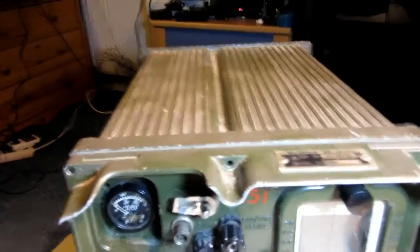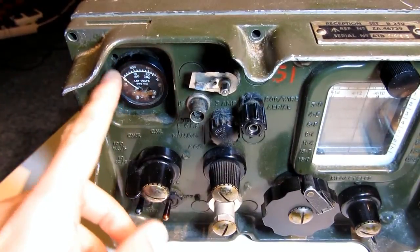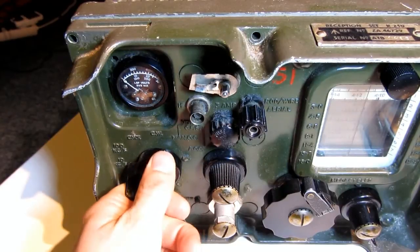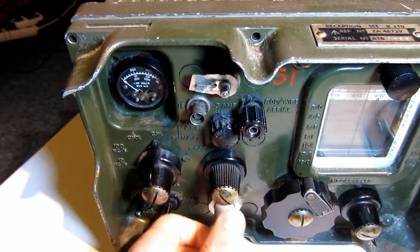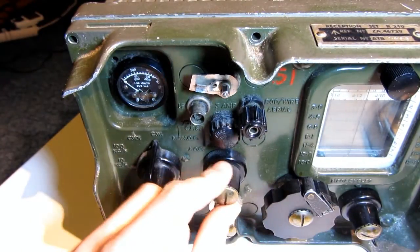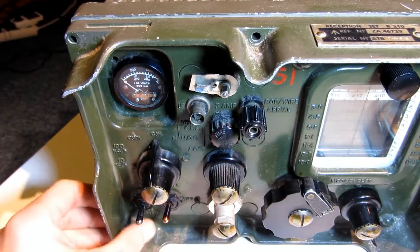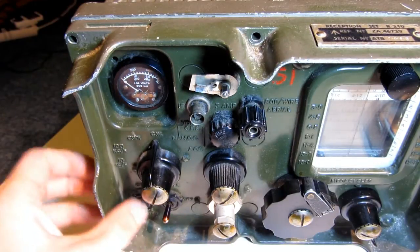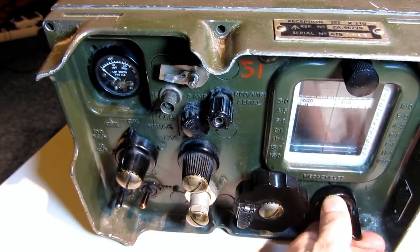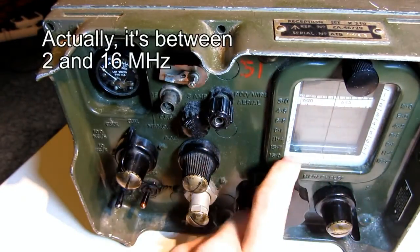So if you have a look, it has a signal strength meter. Here you can choose between AM, SSB and CW. It has some fine-tuning for the SSB signal. Some sound settings, high and low filter. This is a tuning knob and this is the band knob. And the range was between 3 and 16 MHz.